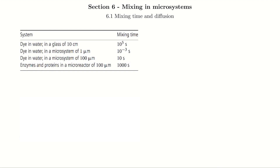If we have dye in water — fairly small molecules — at the macro scale of 10 centimeters, we would have a mixing time of 10 to the 5 seconds, which is 100,000 seconds or about 27 hours. Whereas if we get down to a very small microscale system like one micron with small water molecules, the mixing time is very fast at 10 to the minus 3 seconds. For more realistic microsystem sizes, water at 100 microns is about 10 seconds — not too bad.